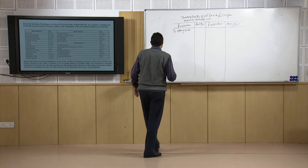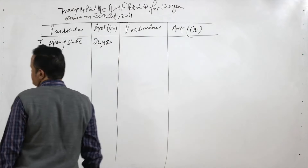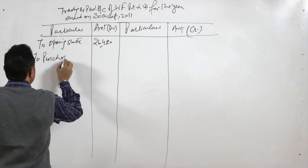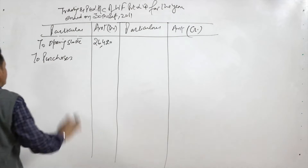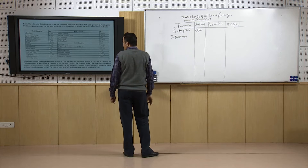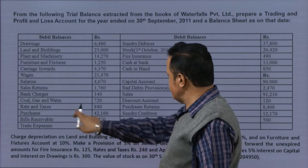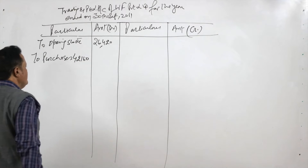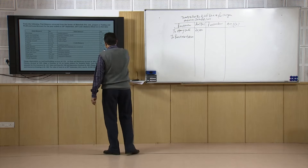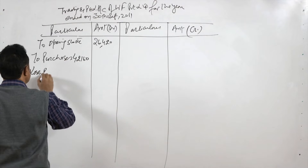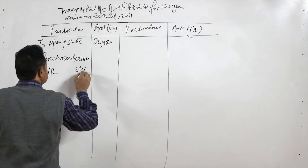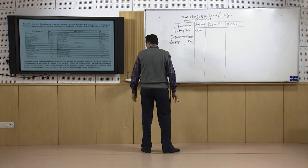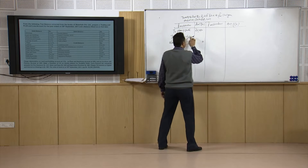The opening stock of raw material is given as 26,420 rupees — this is the raw material left over from the previous year which we use first. Then the second item is purchases: when this material is finished we purchase additional material from the market. The purchases figure is 42,160 rupees, put in the inner column because an adjustment is needed. We then subtract the purchase returns of 8,460.